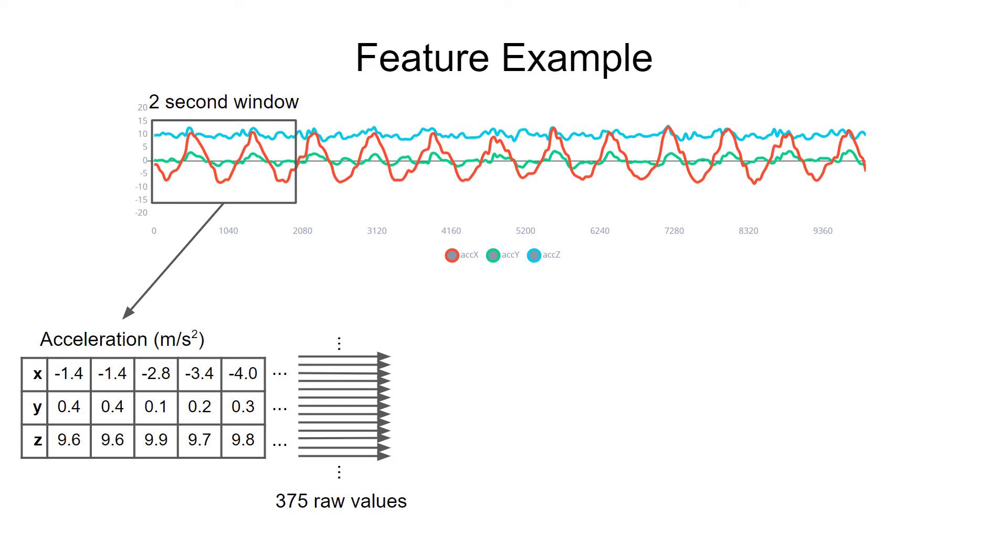For example, maybe we calculate the root mean square for all 125 samples in each axis. This is a straightforward calculation that gives us a single number per axis and gives us something like an average or mean for all these numbers in each axis.